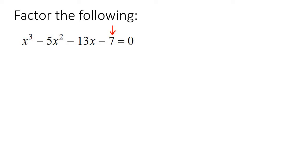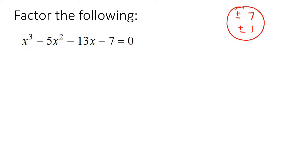I want you to think about all of the factors of that number. So that number — one of the factors is 7 and the other one is 1, and it could be plus or minus 7 and plus or minus 1. What I want you to then do is plug these numbers into the places of x, and you keep going until you get a 0.